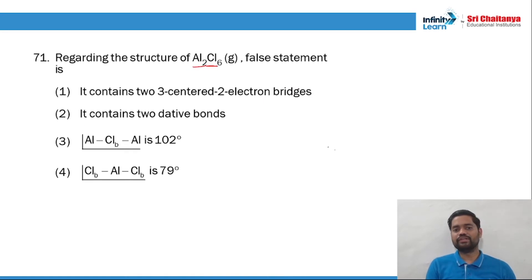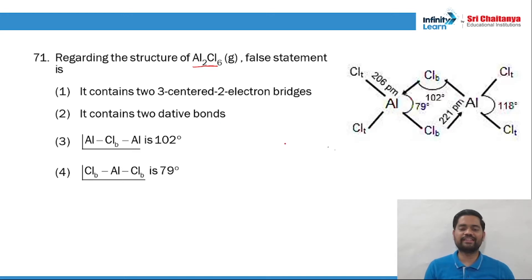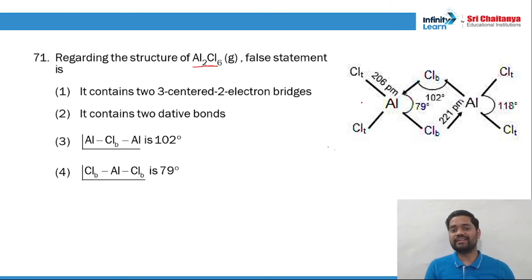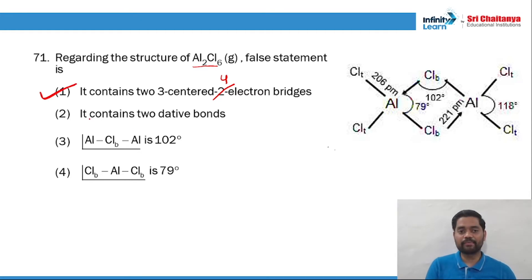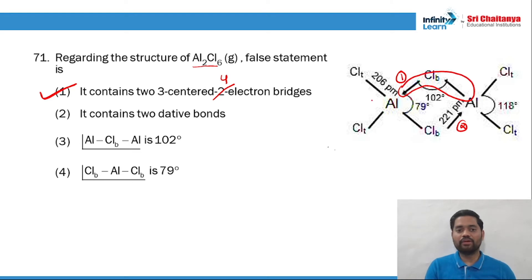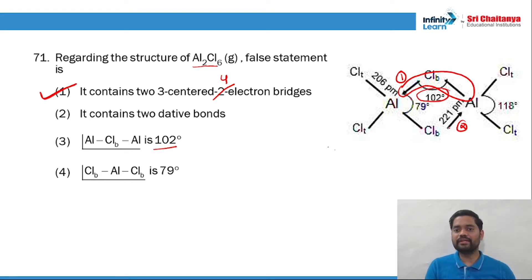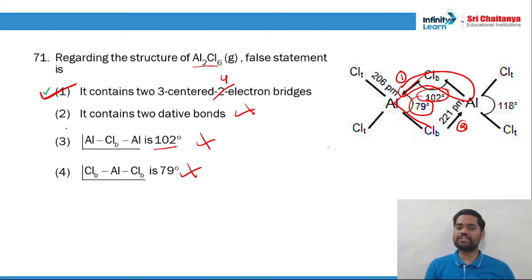Question 71: regarding the structure of Al2Cl6, the false statement is? The structure contains 2 three-center two-electron bridges — but it has to be three-center two-electron, not four-electron. So the first statement itself is false. It contains 2 dative bonds — checking: 1, 2, yes, 2 dative bonds. The bond angle (Cl-Al-Cl bridging) is 102°, and the other angle is 79°. These are correct. So option number 1 is the right answer (the false statement).